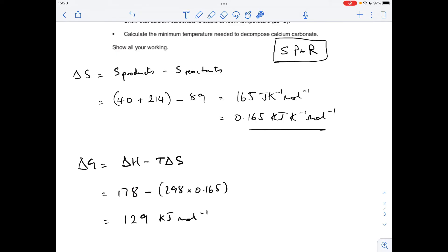And the entropy change we've just worked out, or we've just shown that it's 0.165 kilojoules per kelvin per mole. So that's given us a delta G value for this reaction of 129 kilojoules per mole. It's greater than zero, and therefore that reaction is not feasible at that temperature.